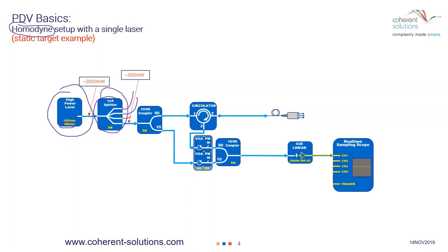Next, it goes through a 10-90 coupler — 90% of the light goes through the upper path, and 10% comes down through the lower path. The next component is known as a circulator. Circulators are very interesting components: anything put into port 1 will come out of port 2, anything going into port 2 will come out of port 3, and anything going into port 3 will come out of port 1.